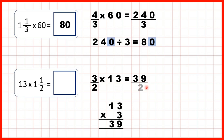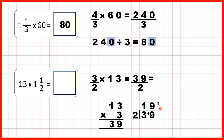The denominator of 2 stays the same, so as an improper fraction our answer is 39 over 2. We can change that back into a mixed number by dividing 39 by 2. 3 divided by 2 is 1 remainder 1, and 19 divided by 2 is 9 remainder 1. The denominator stays as what we were dividing by, so that gives us our answer: 19 and a half.